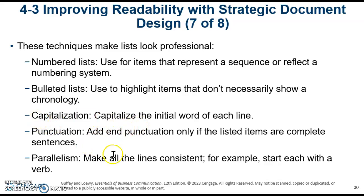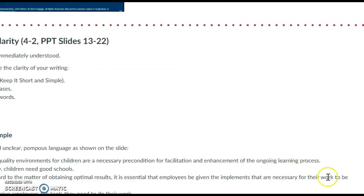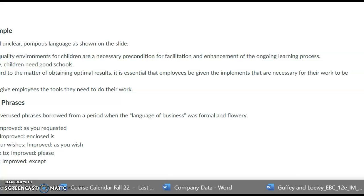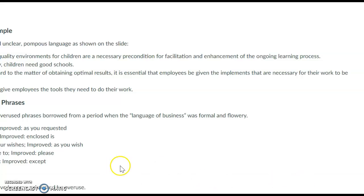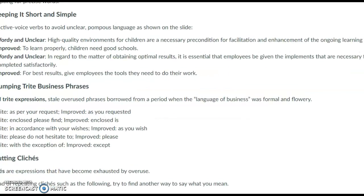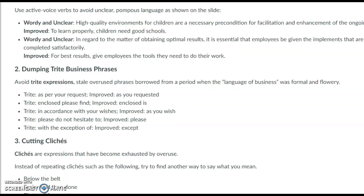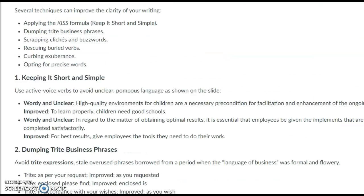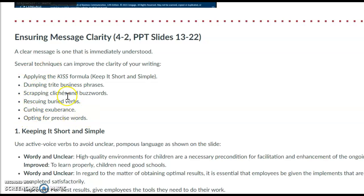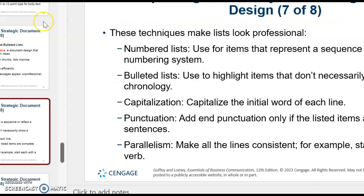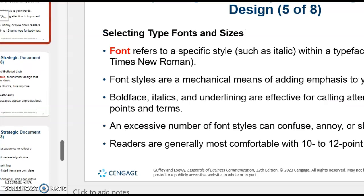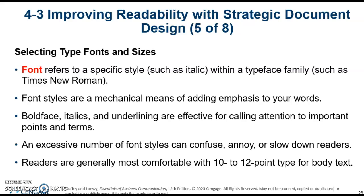Capitalize the initial word of each line, and add punctuation only if the bullet items are complete sentences. For example, if you have a bulleted list that's not a complete sentence, you don't have to use periods or punctuation at the end. Remember: use punctuation only if it's a complete sentence.